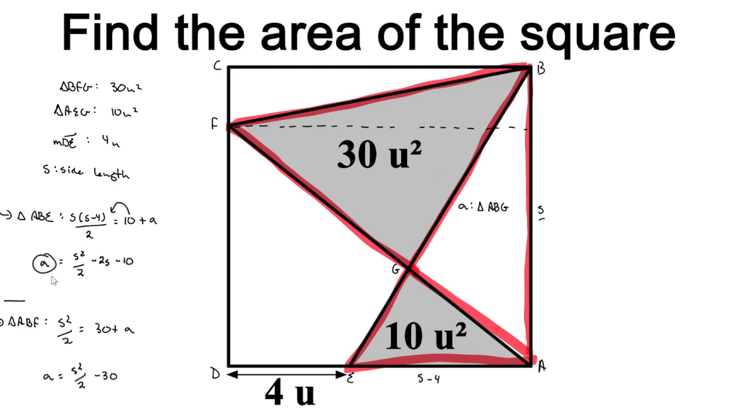So now that we have isolated A in both our equations, we can set them both equal to each other and solve for S. Now our S squared terms will cancel. I'll move this 2S to the other side so it becomes positive, and I'll move my minus 30 to the other side—it becomes positive as well. And we'll get 20 equals 2S, or S equals 10. That is the side length of our square, and the area of our square will be 100 square units.